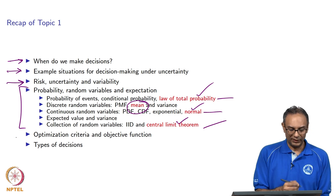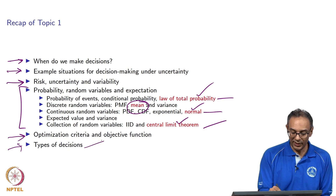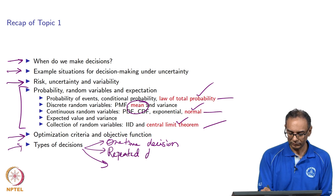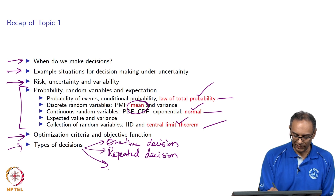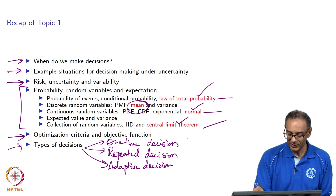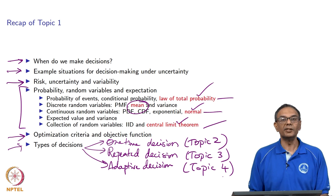At the end of Topic 1, we looked at various criteria for optimization and what objective functions we should use. We also looked at different types of decisions: one-time decisions, repeated decisions, and adaptive decisions. Topic 2 covers one-time decisions, Topic 3 covers repeated decisions, and Topic 4 covers adaptive decisions. That is the plan. So let us move on to Topic 2.